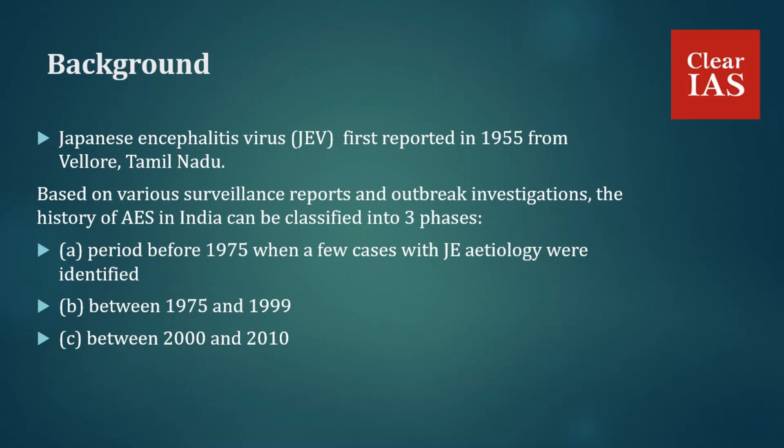The history of Acute Encephalitis Syndrome in India has paralleled that of Japanese Encephalitis Virus since the first report in 1955 from Vellore, Tamil Nadu. The first outbreak of JEV was reported in Bankura district of West Bengal in 1973. Thereafter, sporadic cases and outbreaks have been the leading cause of premature deaths due to the disease in India.